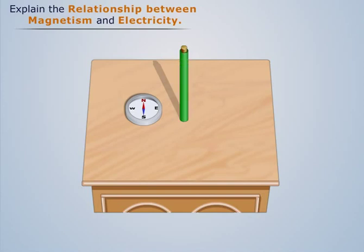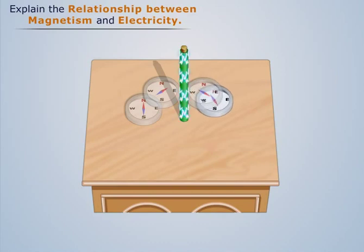We see that as soon as the current starts flowing through the wire, orientation of the compass needle changes from the north and points towards different directions at different positions.